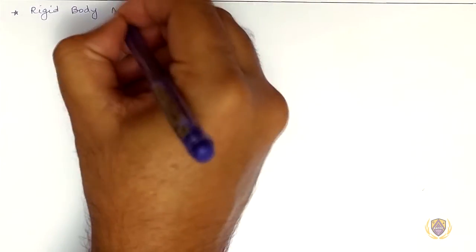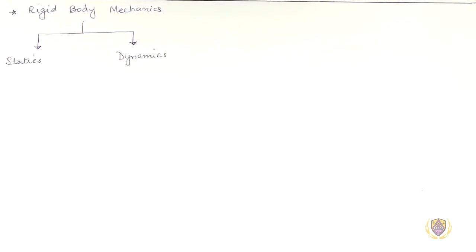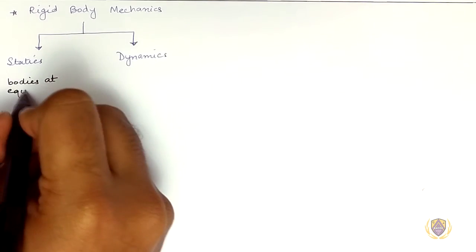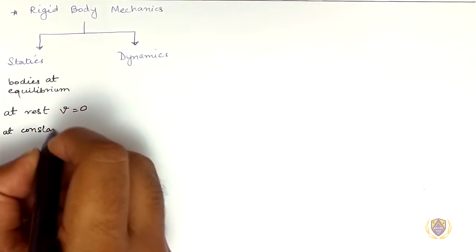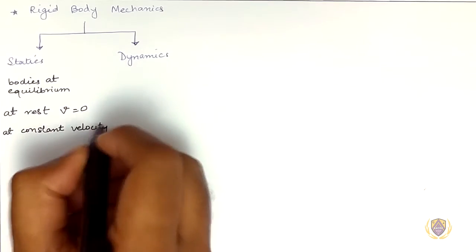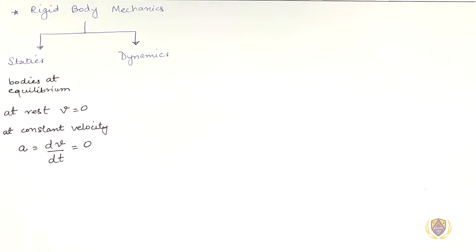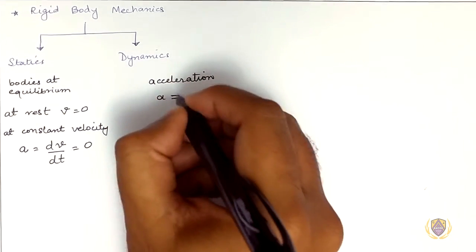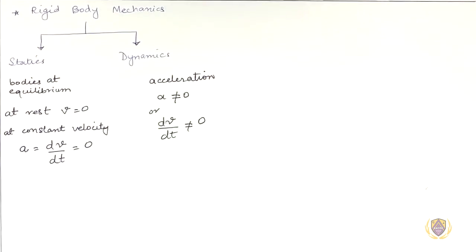Rigid body mechanics can further be subcategorized in terms of statics and dynamics. Statics deals with bodies in equilibrium with respect to motion, meaning either they are at rest when velocity is zero, or moving with a constant velocity when acceleration is zero. Dynamics, on the other hand, deals with bodies with accelerated motion where velocity changes over time.